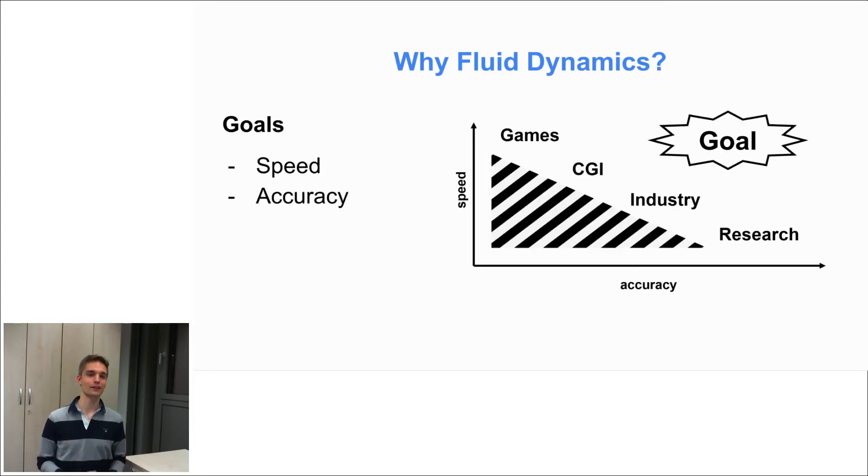But speed and accuracy is not everything. Stability for example is also very important. And another important point is differentiability, for example in the setting of optimal control experiments. And one really exciting field of research is how can we achieve these goals with machine learning.